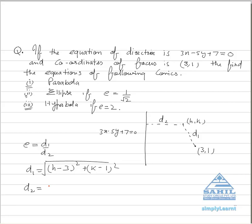What about d2? d2 is the distance of the point from the line that is 3h minus 5k plus 7 upon root of 9 plus 25. That equals 3h minus 5k plus 7 upon root 34.